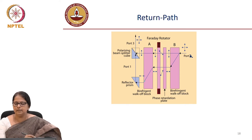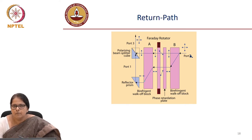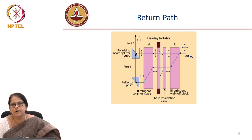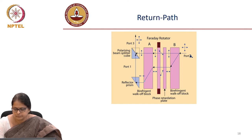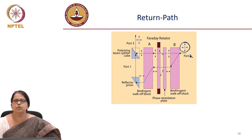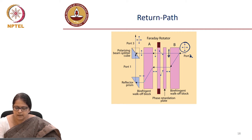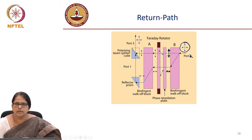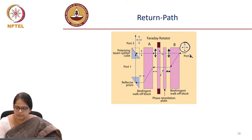In the return path, let us say this is port 2. We are trying to see how from port 2 light is blocked to port 1 but transmitted to port 3. Again the birefringent plate splits the input polarization — which could be arbitrary — into horizontal and vertical components. Vertical polarization remains intact; horizontal polarization is displaced. The combination of Faraday rotator and half-wave plate does not do anything to the polarization in the reverse path, so vertical remains vertical and horizontal remains horizontal.